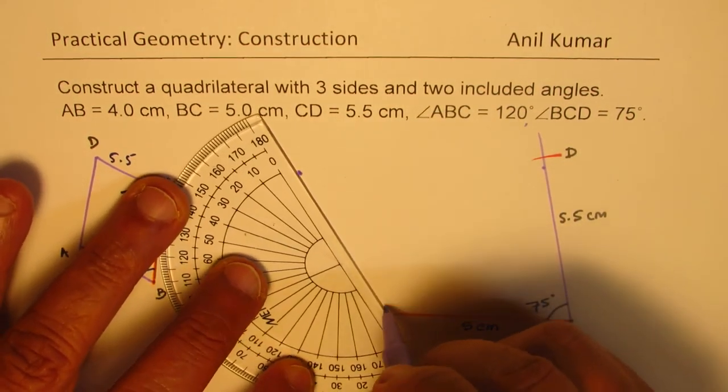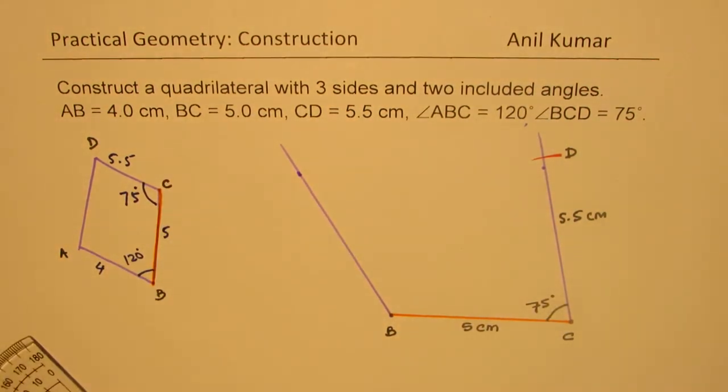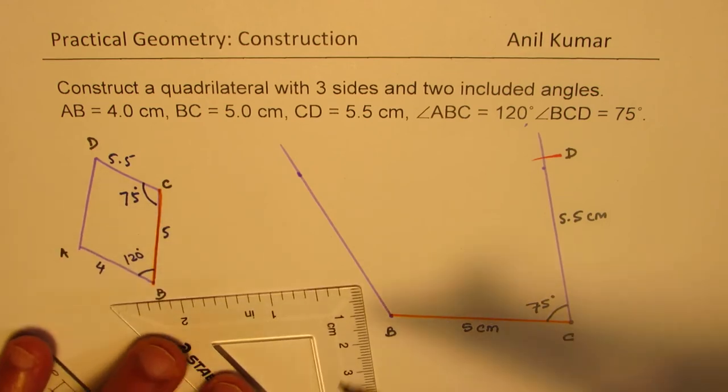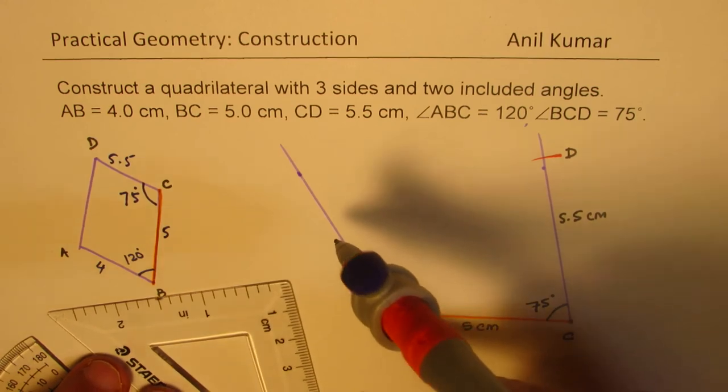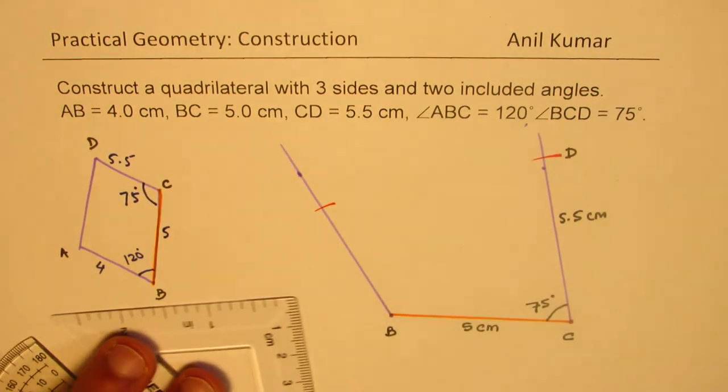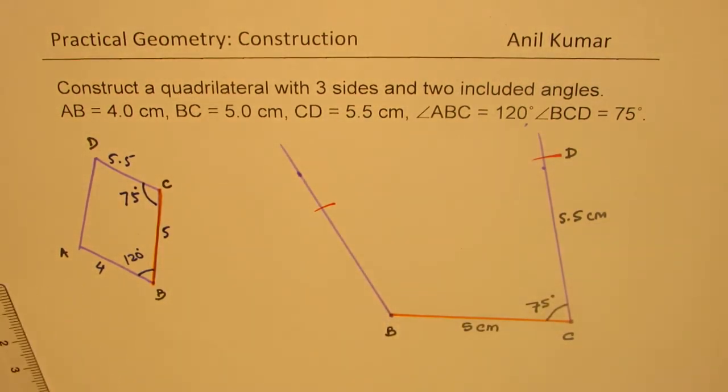And on this, we have to take 4 units. Use the compass once again. That is 4 units. So we get our point A.